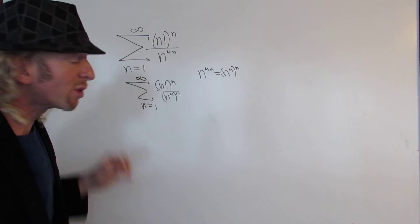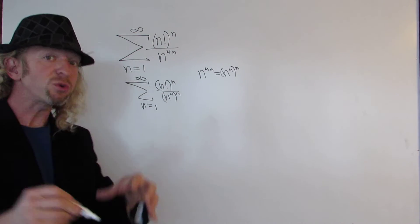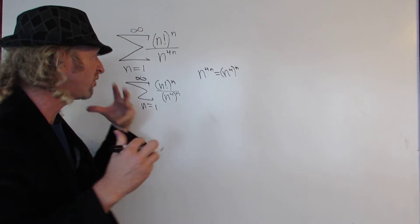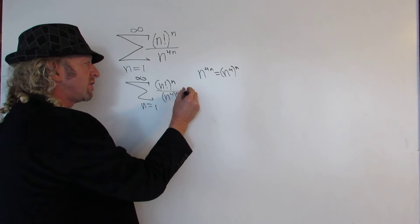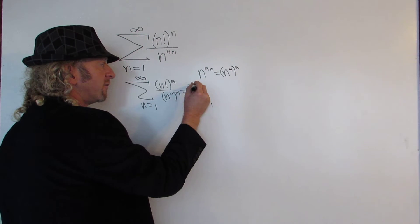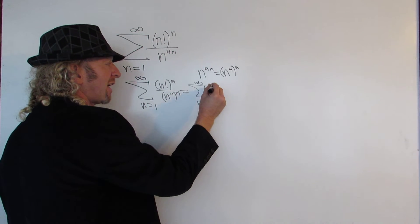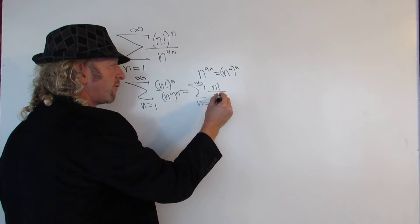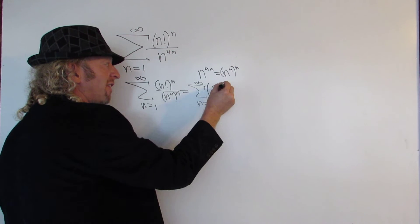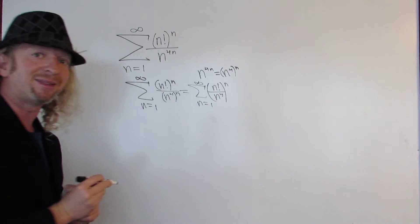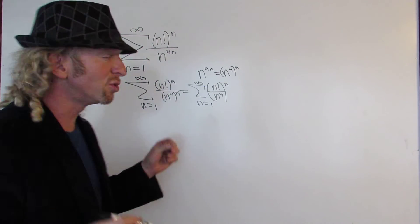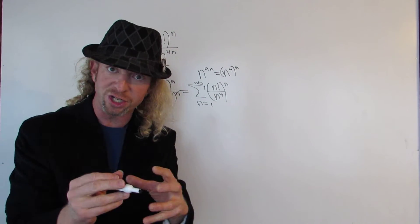Now the numerator is to the nth power and the denominator is to the nth power, so we can write the whole thing to the nth power. This is equal to the infinite sum as n runs from 1 to infinity of n factorial over n to the 4th, all to the nth power. And the idea now is that we can use the root test.